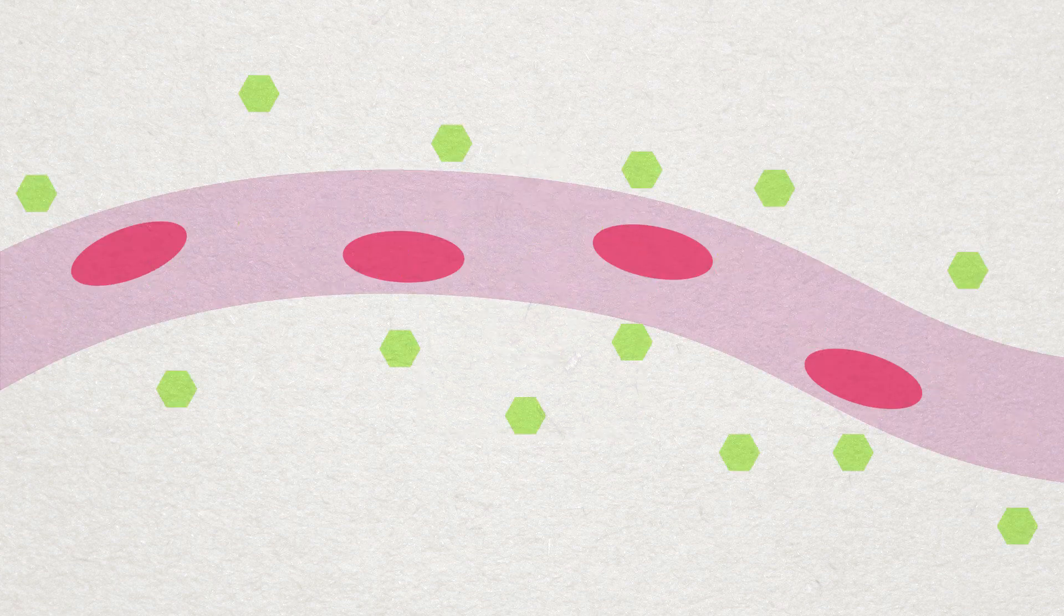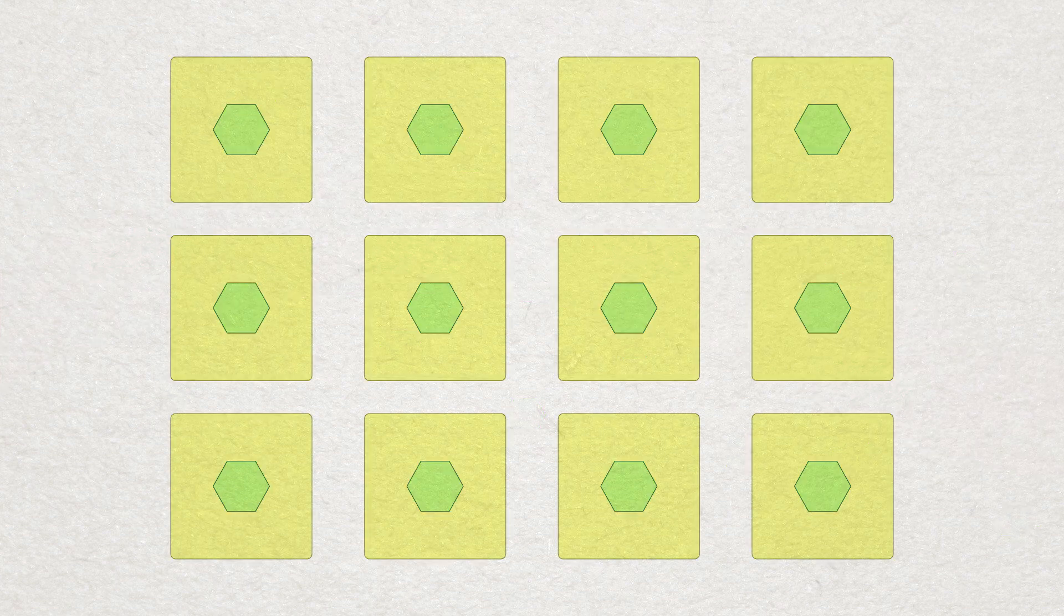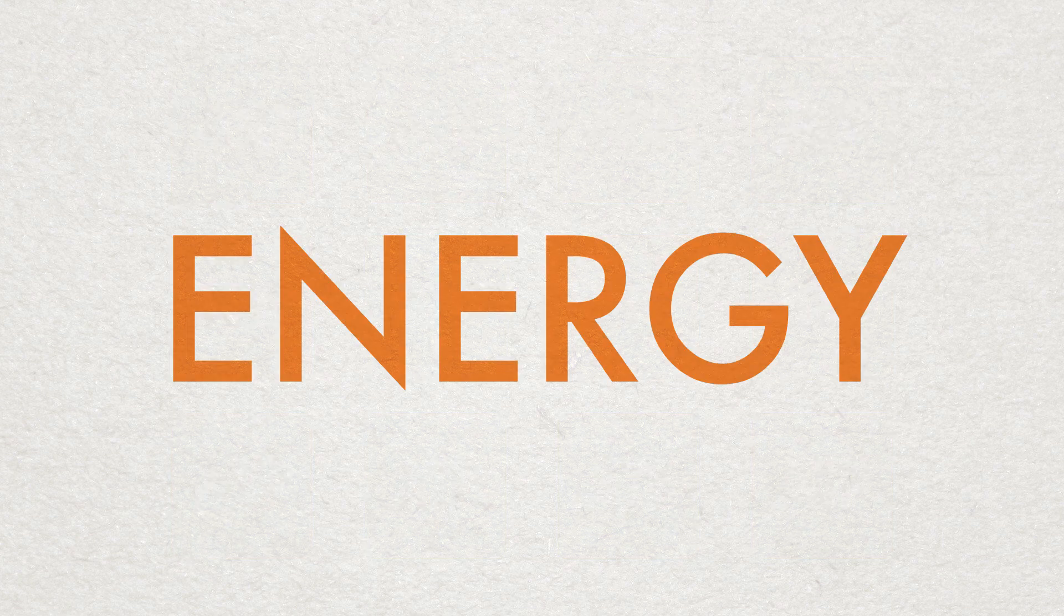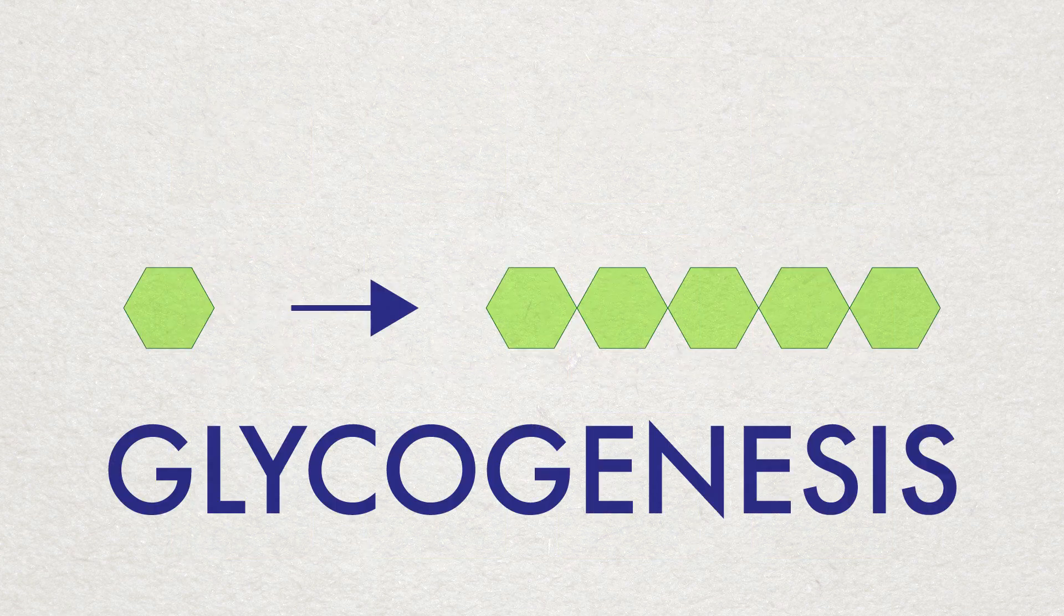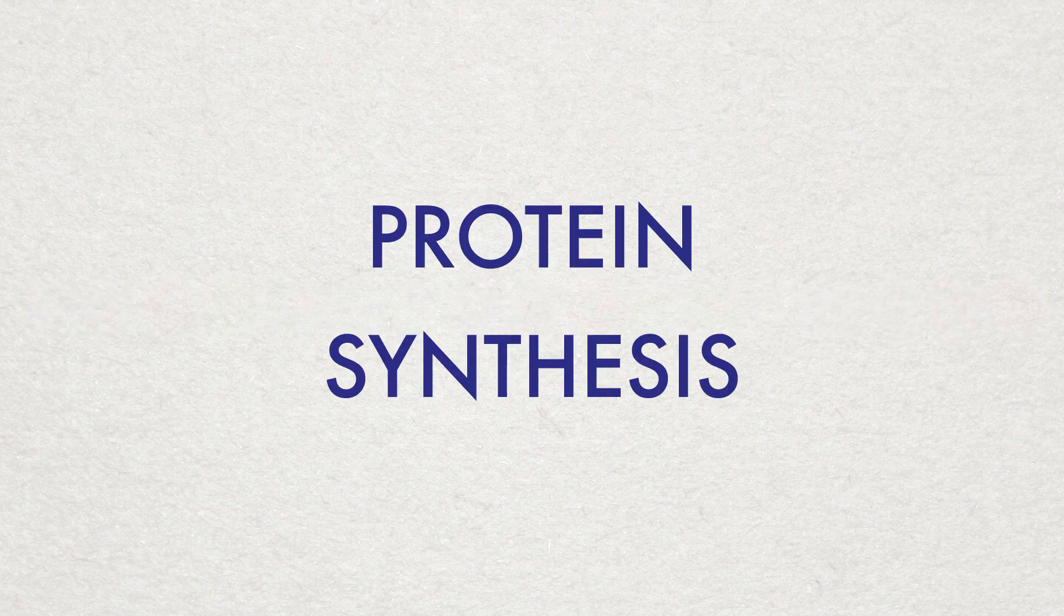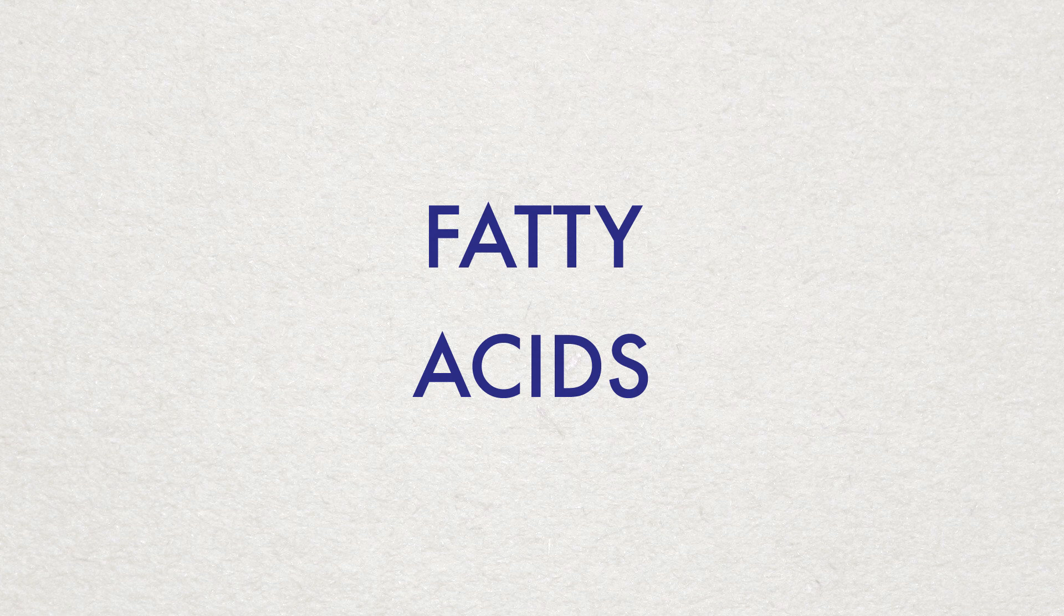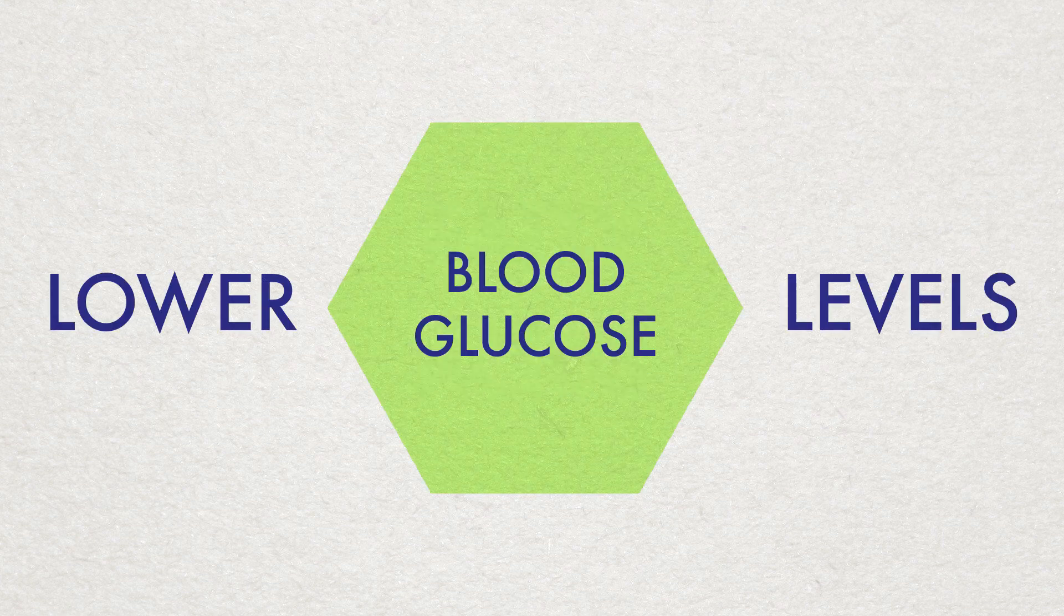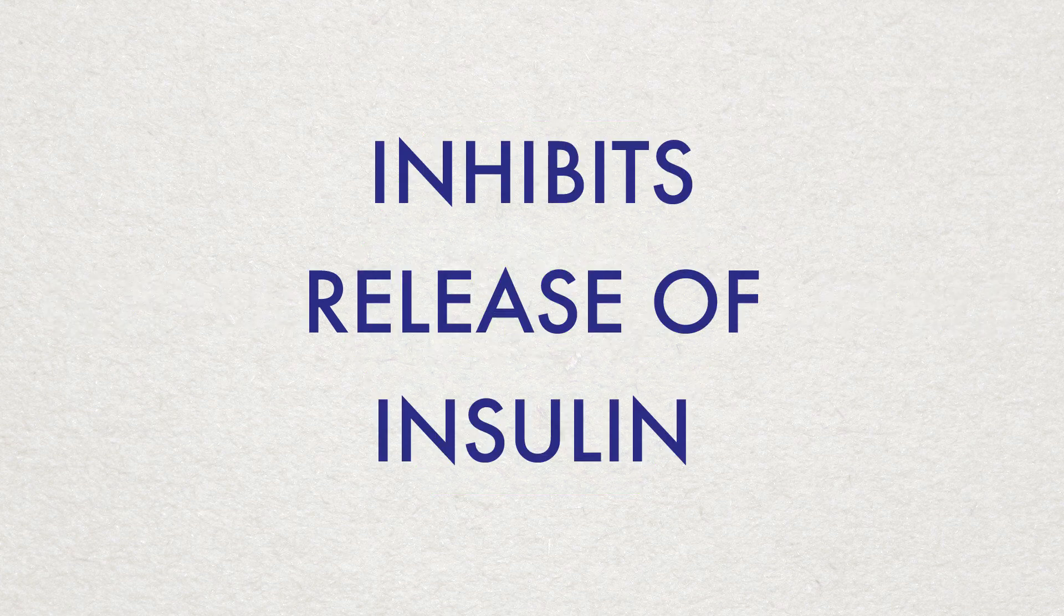When the glucose is in the cells, glucose is used to make ATP for energy. Any extra glucose is converted into glycogen, to be stored mainly in the liver and skeletal muscles. Insulin also accelerates the uptake of amino acids to increase protein synthesis. There is also an increased synthesis of fatty acids. These actions therefore cause your blood glucose levels to fall, which in turn, inhibits the release of insulin.